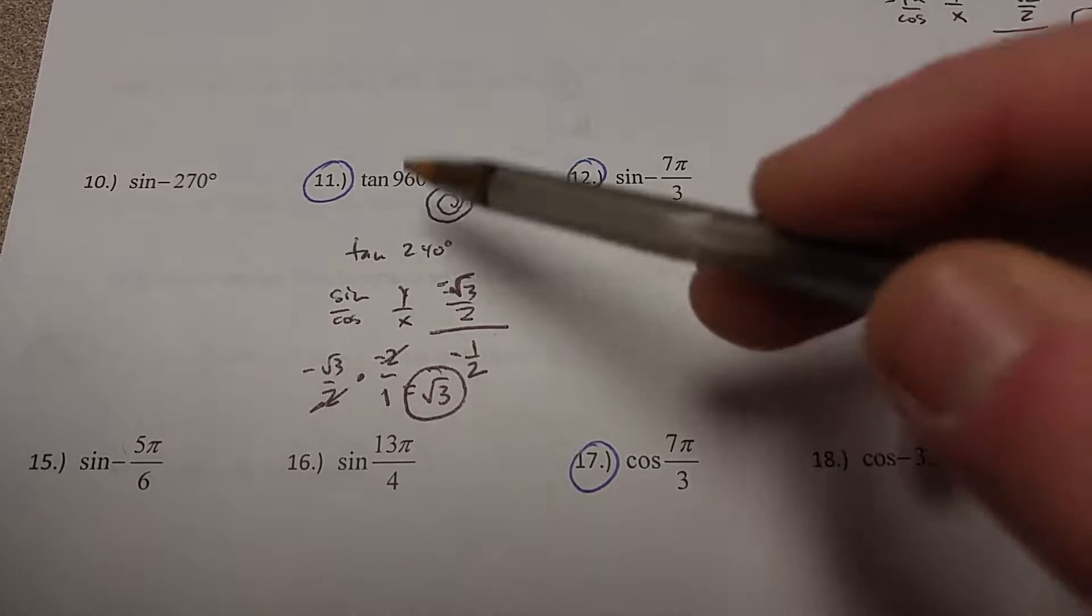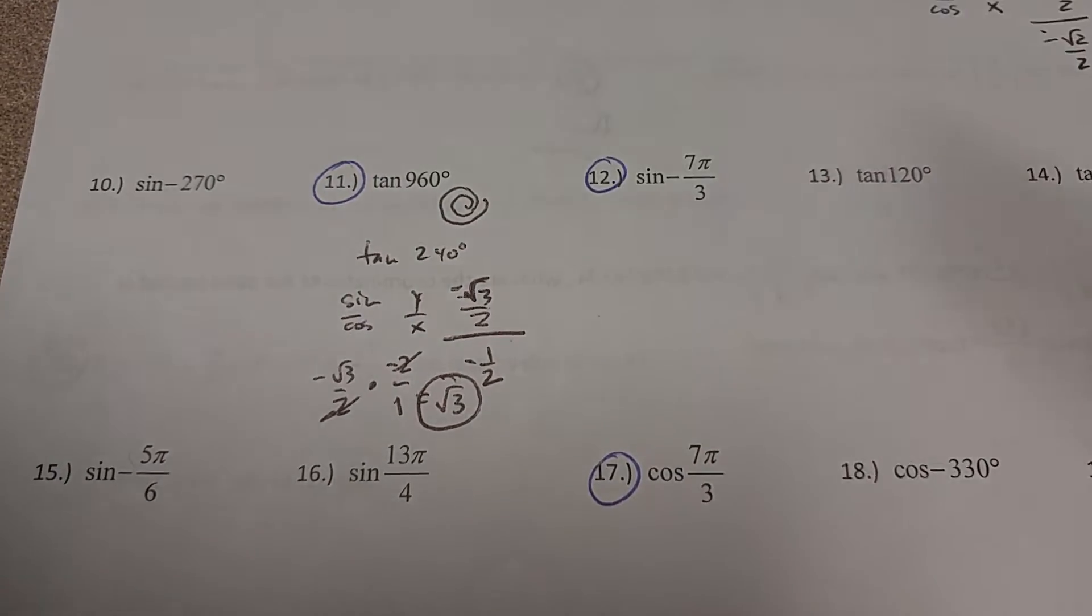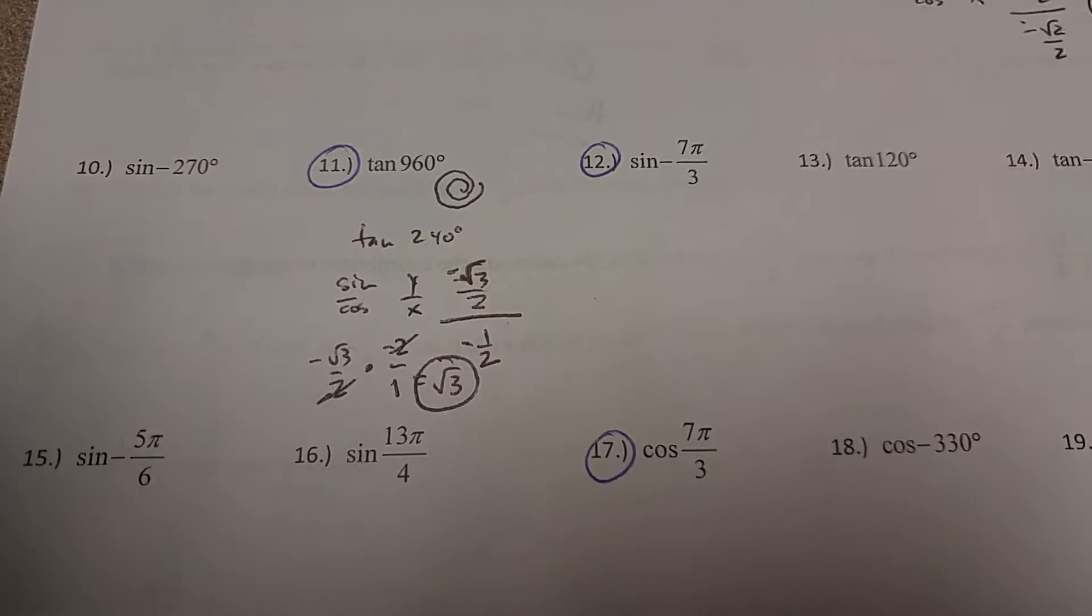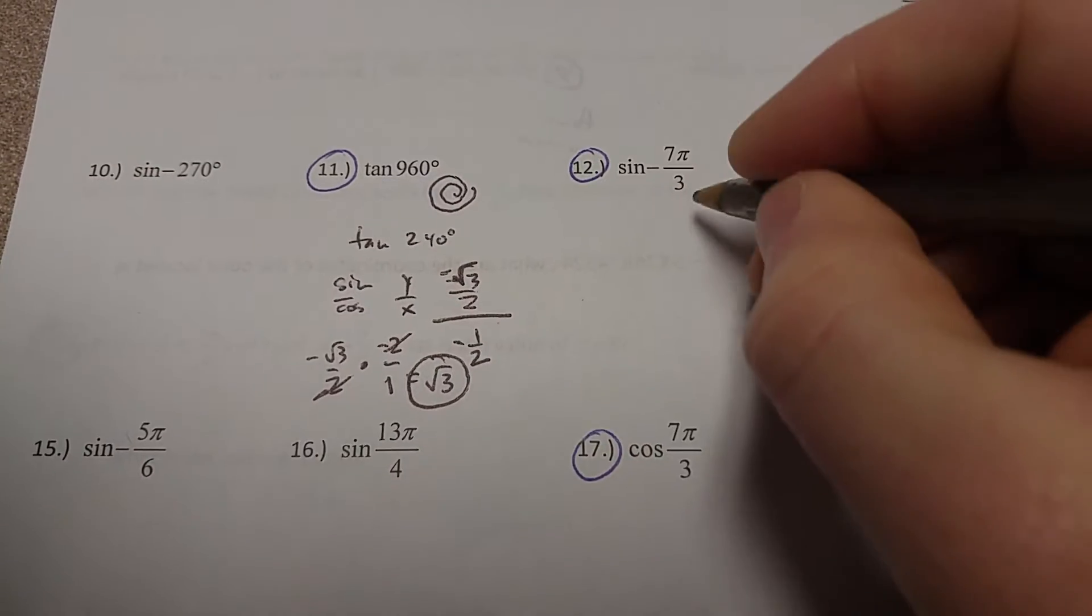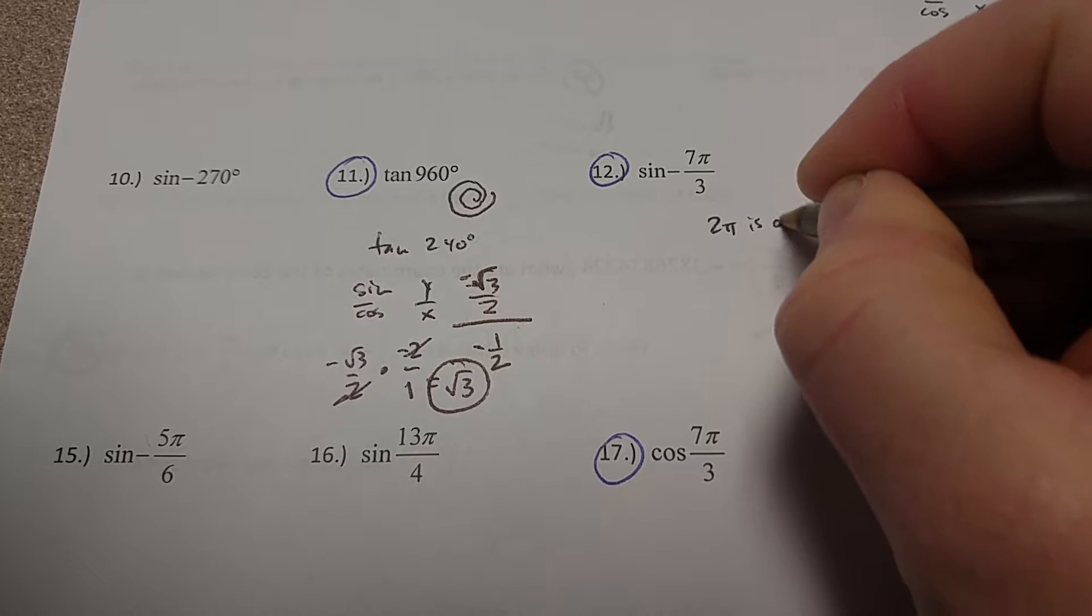Sine of negative 7π over 3 is going to be similar to tangent of 960 in the fact that I'm going around the circle more than once. So remember that 2π is once around.